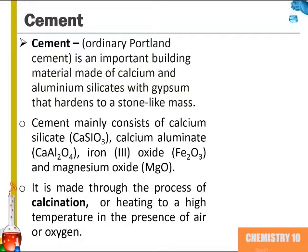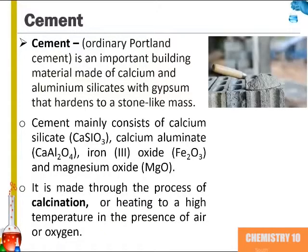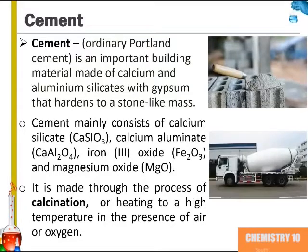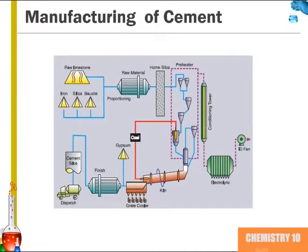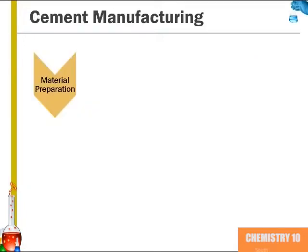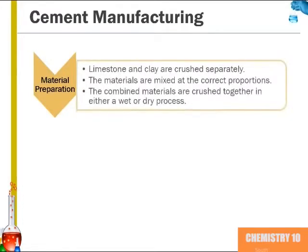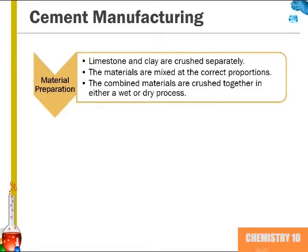Cement is made through the process of calcination — heating to a high temperature in the presence of air or oxygen. Here we can see a schematic for the manufacturing of cement. First, we have material preparation: limestone and clay are crushed separately, then mixed at the correct proportions. The combined materials are then crushed together in either a wet or dry process, with the dry process being preferable because it consumes less energy.